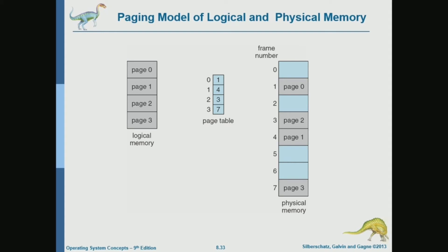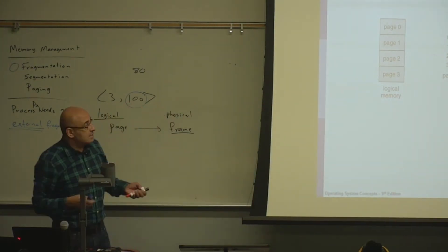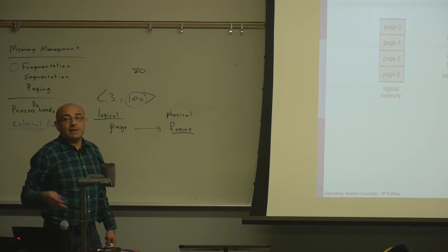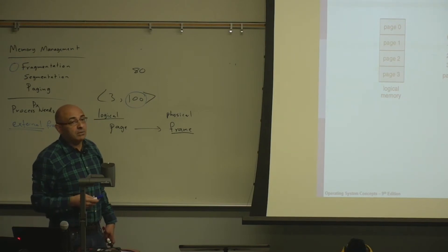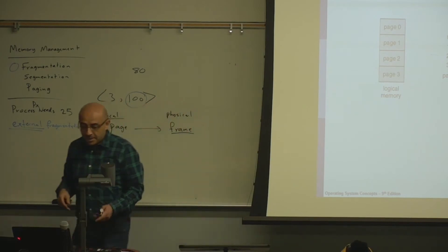The page table says: page 0 is in frame 1, so frame 1 has page 0 in it. Page 1 is in frame 4. Page 2 is in frame 3. In physical memory we have frames; in logical memory we have pages. A frame and a page are the same size — it's just that the physical thing is called a frame and the logical thing is called a page.